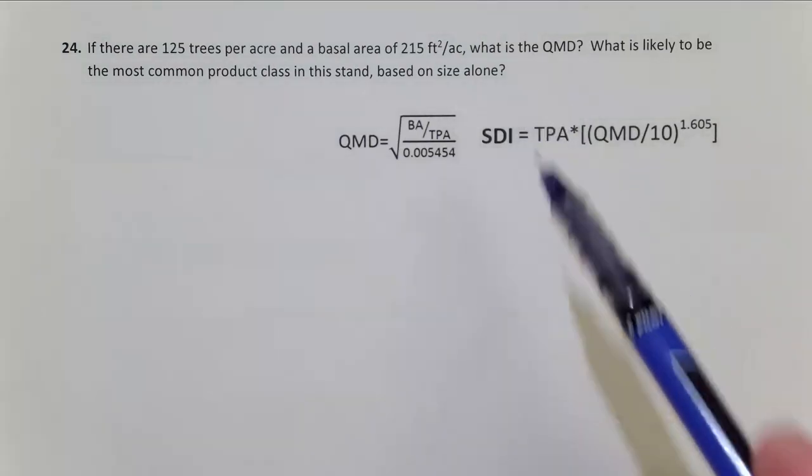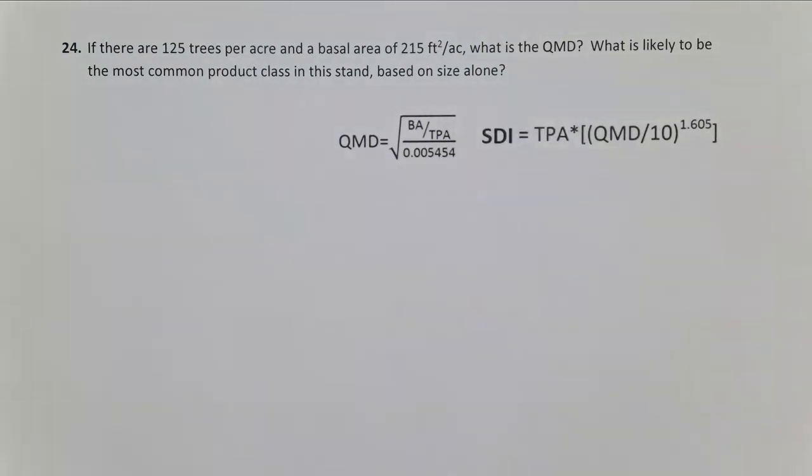We'll take it a step further than the actual question though. Back in 23, we looked at determining whether we should thin a stand or not based on interpreting relative densities. Let's go ahead and do that again because we'll have all the data we need to do that.